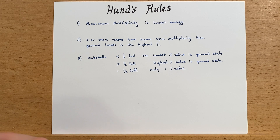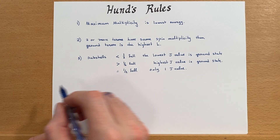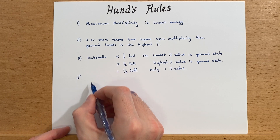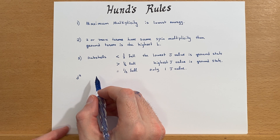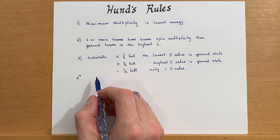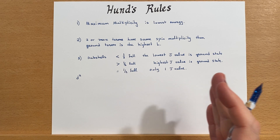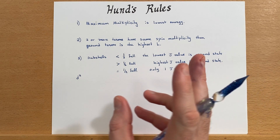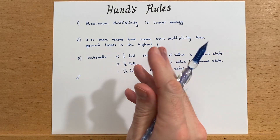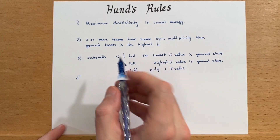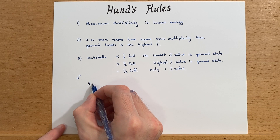Let's go back to the D2 example and order these states from lowest to highest energy. We had triplet F, triplet P, singlet G, singlet D, and singlet S. The two triplet states will have the lower energy, and since we have two of them, we look at the highest L value. The highest L corresponds to F, so triplet F is the lowest energy term.